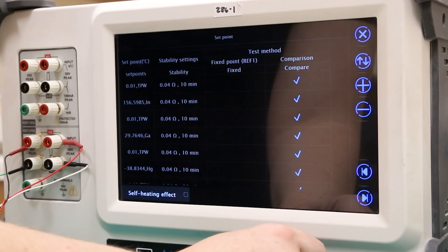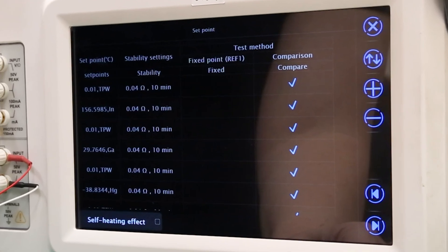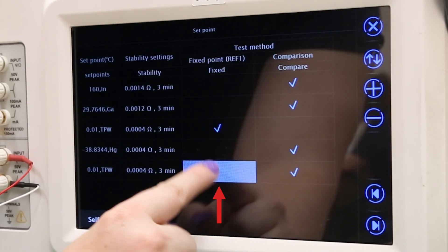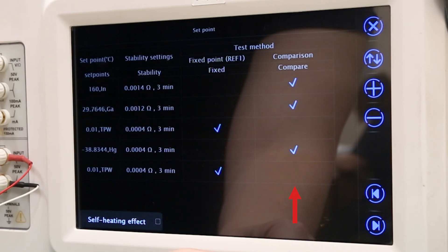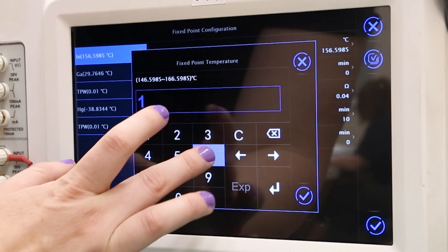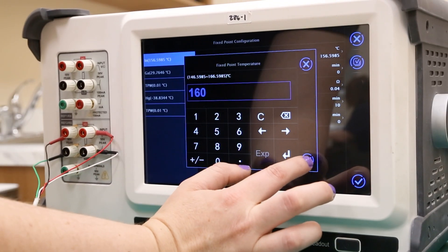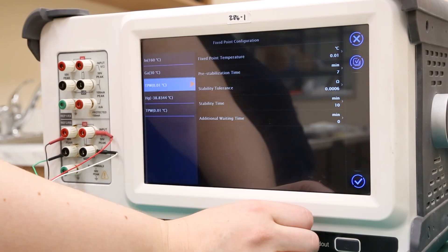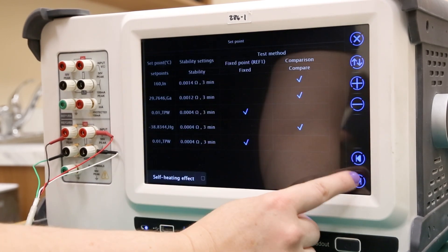Here the test method for each calibration point can be changed and points can be added or removed using the plus or minus keys. We will use fixed point tests for both triple point of water calibration points and comparison tests for the other three points. Specific test settings can be changed here as well by selecting the calibration point you wish to change parameters for. Once each point is configured to your lab's testing standards, press the next key.